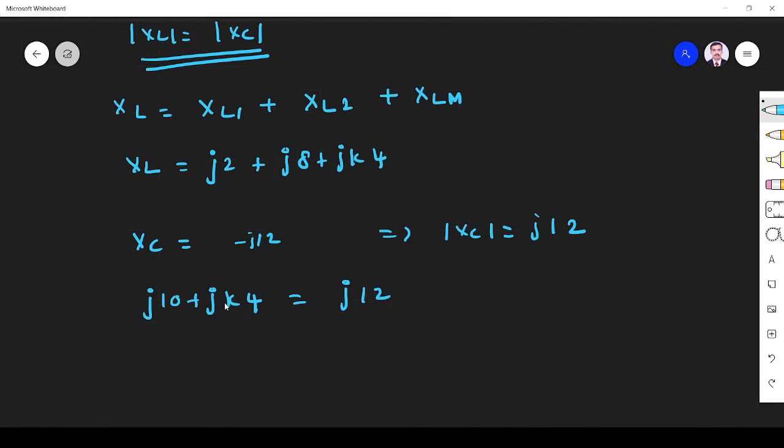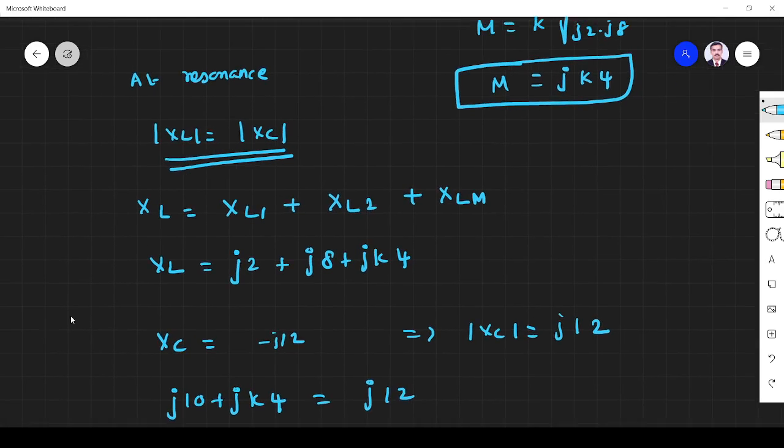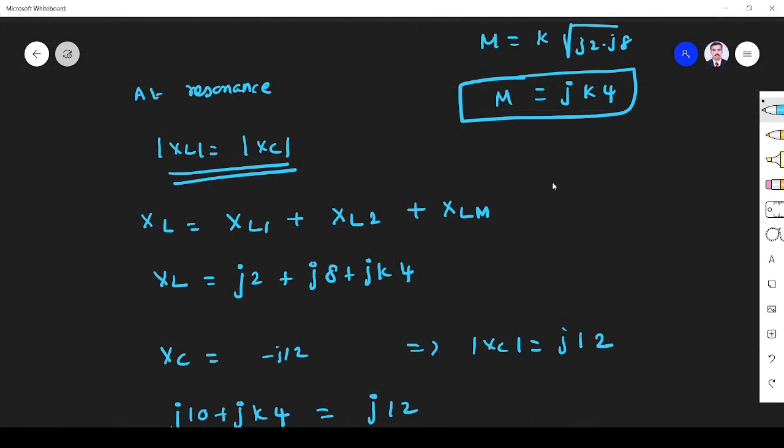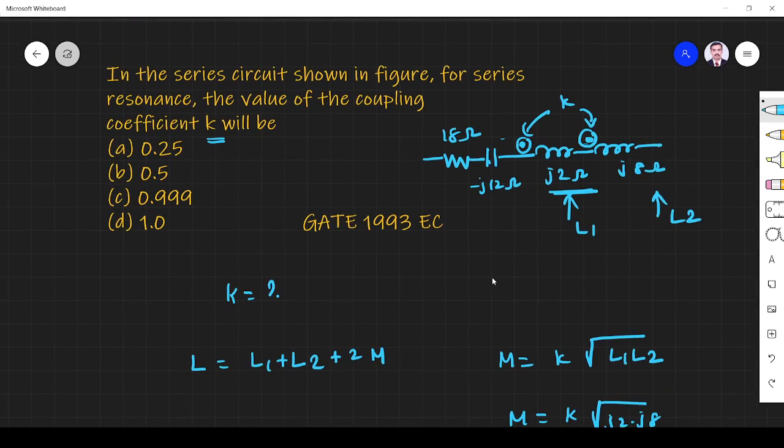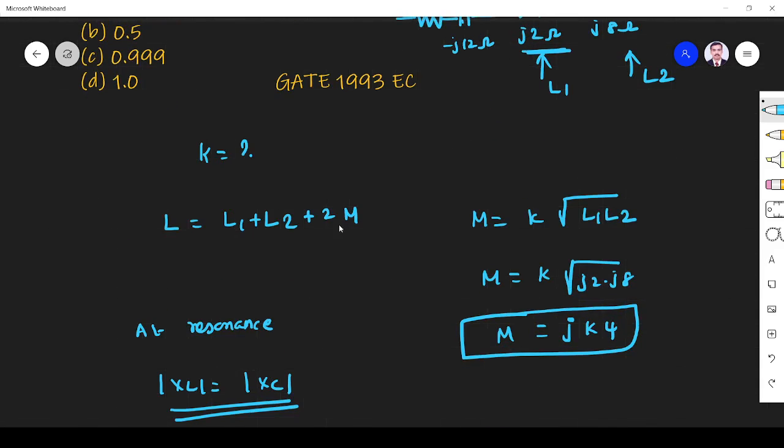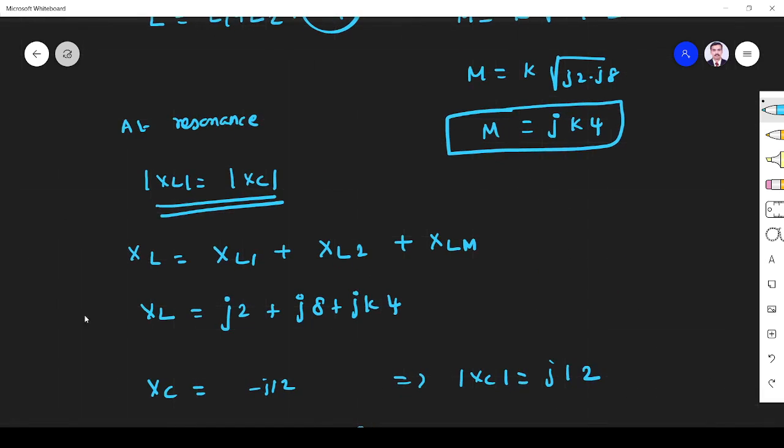Wait, I made a mistake. Let me check. The equation is L1 + L2 + 2M, so it's j2 + j8 + 2M. When multiplying by 2, we get jk8, not jk4.